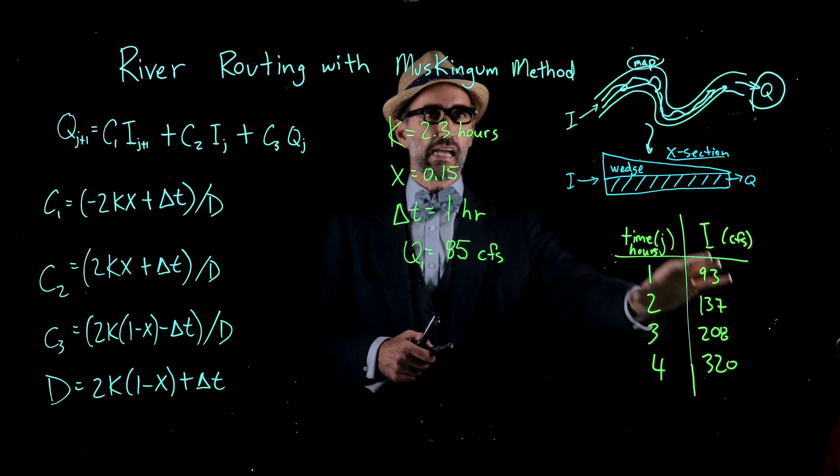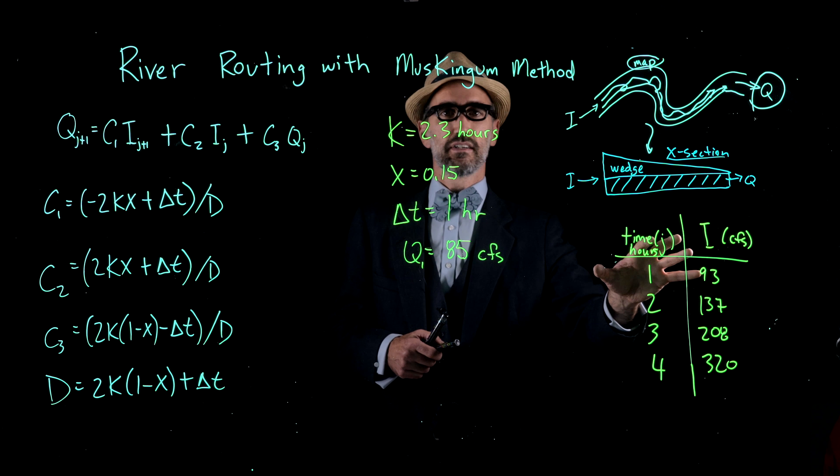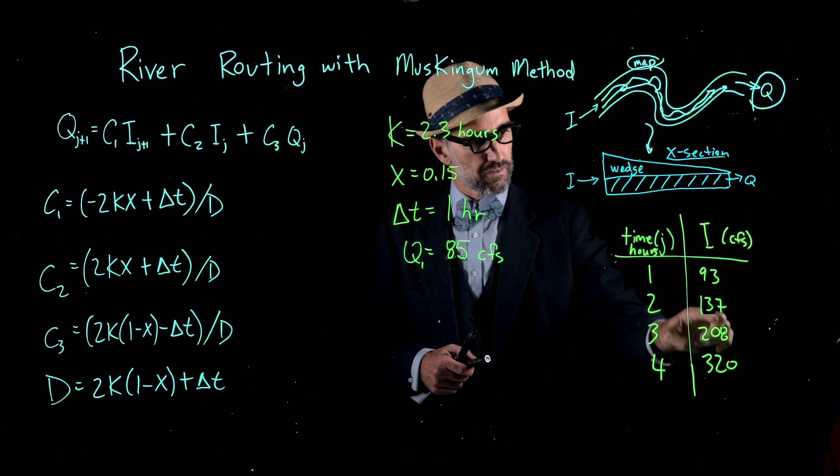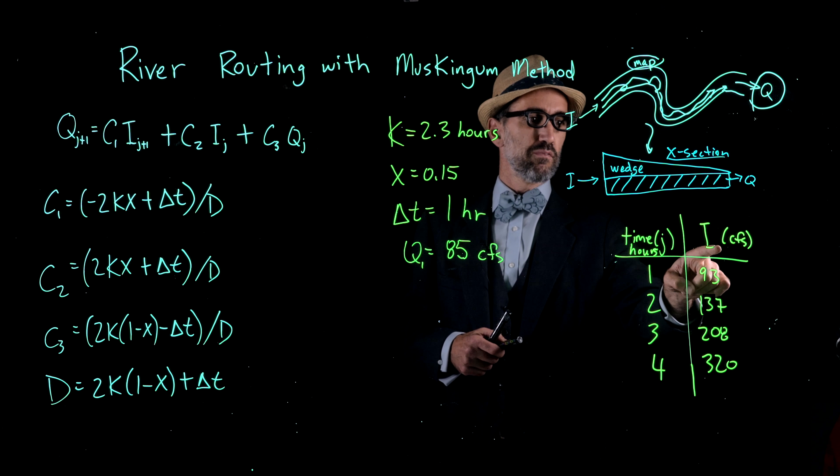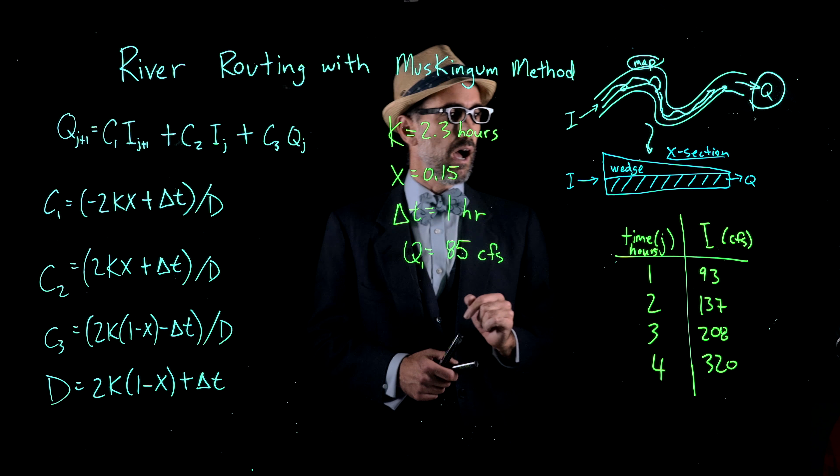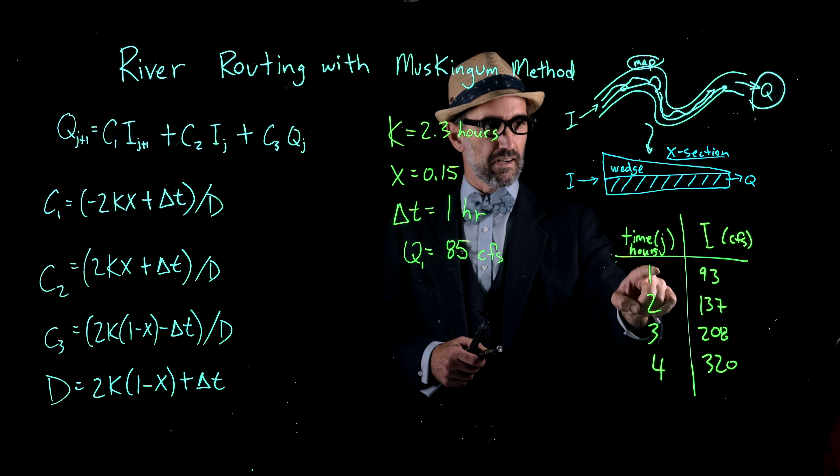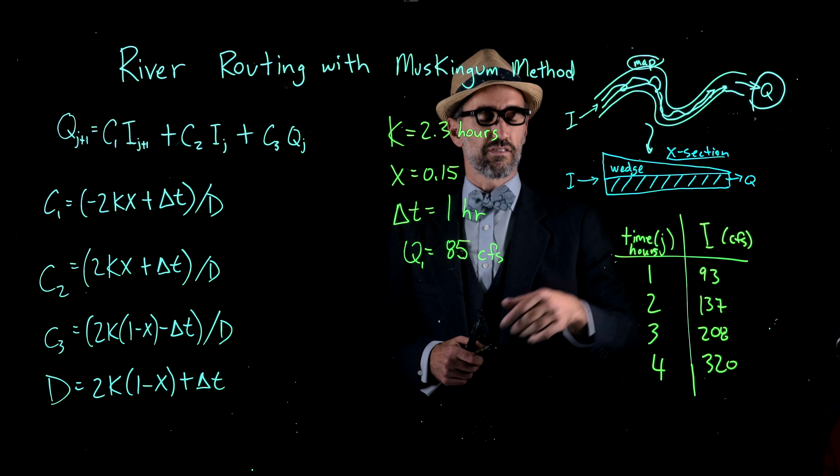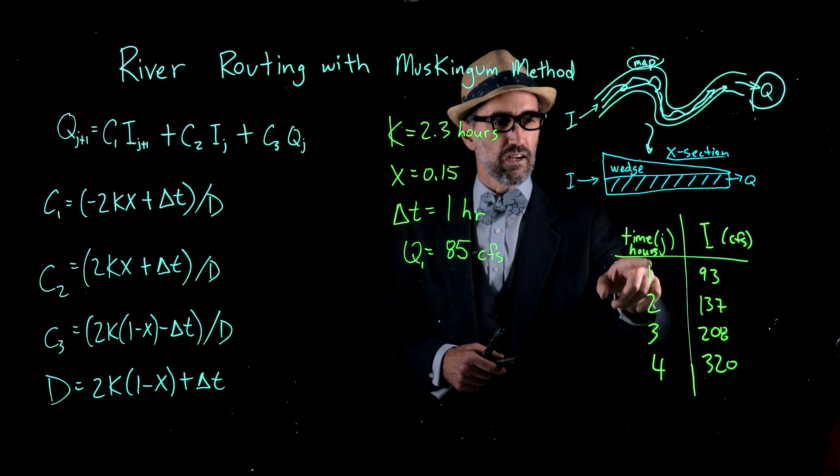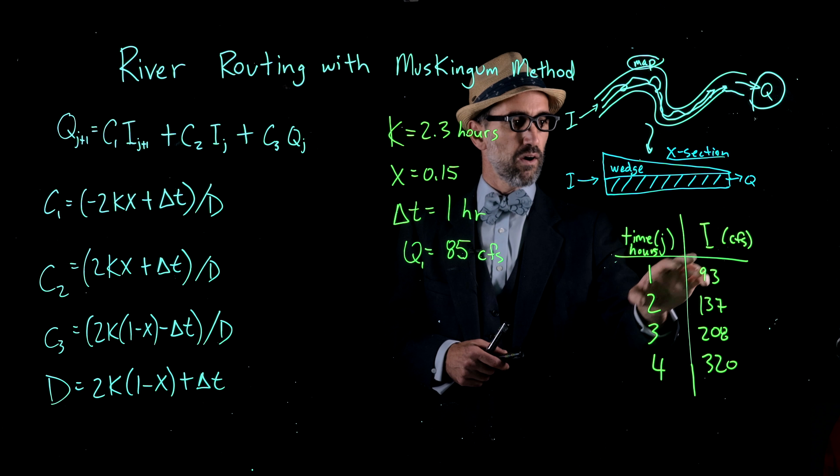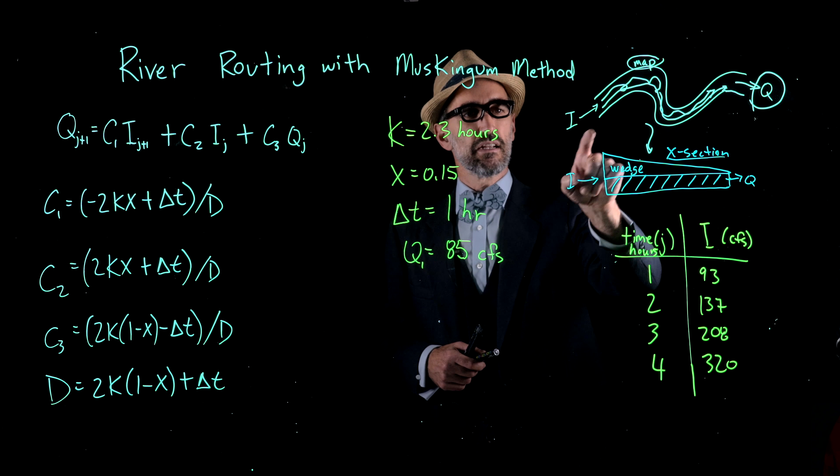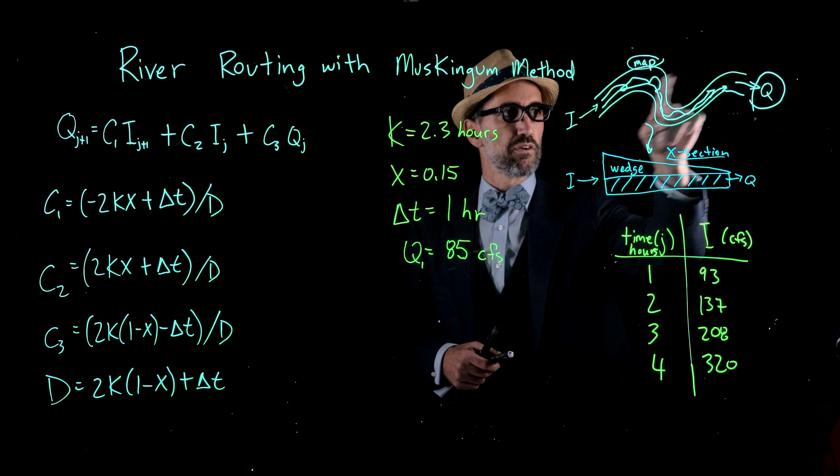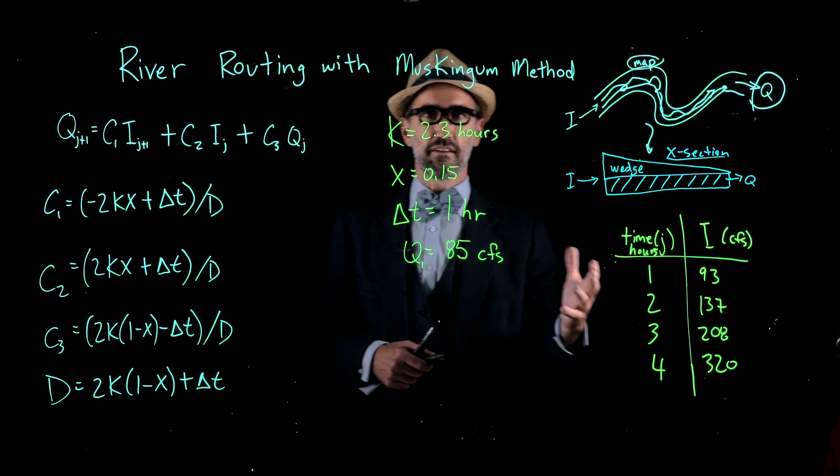Some input variables that we have for this calculation are the stream flow input through time. This is I in cubic feet per second at different hours, shown as a subscript J here. Hour 1, 2, 3, and 4 have different measured inflows to the stream, and we're trying to calculate the outflow in these different hours.